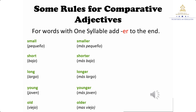Recuerden que un noun o sustantivo es una persona, un lugar o una cosa. Y un adjective es lo que describe a esa persona, lugar o cosa. En este caso sería si es alto, más pequeño, más bajo, más pesado, más joven, etc. So we have our first rule here: for words with one syllable, add 'er' to the end. Para las palabras que tienen una sola sílaba, vamos a agregar 'er' al final.